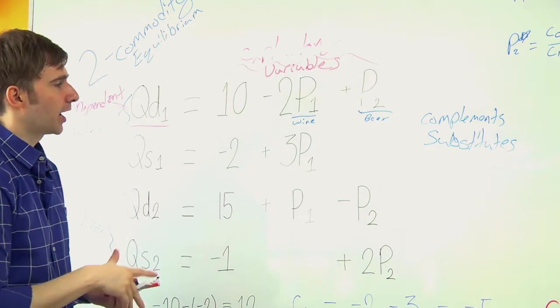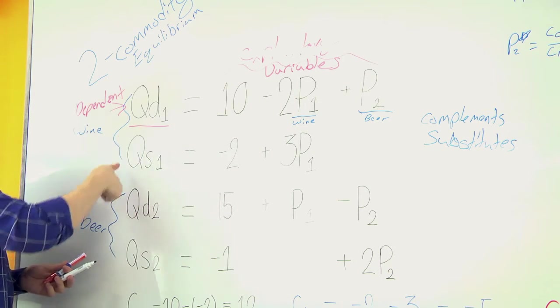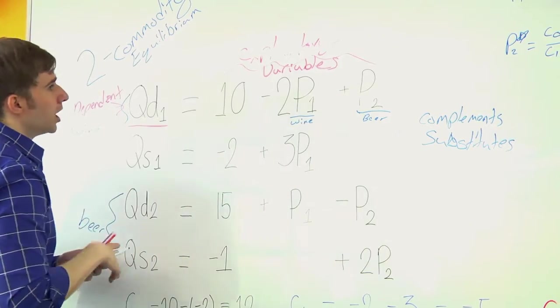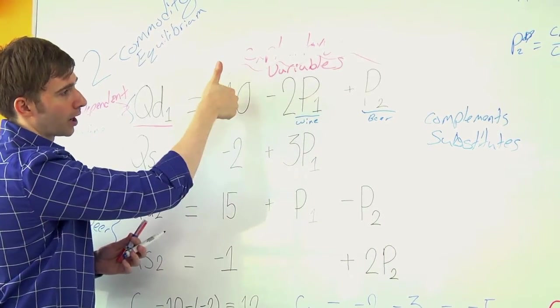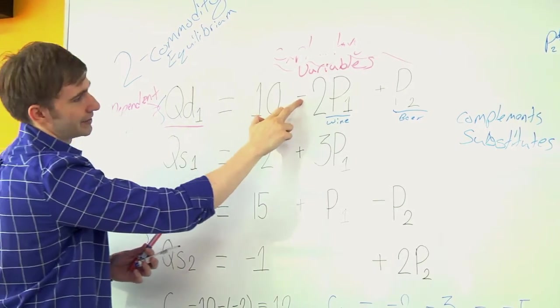So if the price were to go up for beer, then the quantity demand for wine would also go up. So we have a positive sign. If the price for wine were to go up, then the quantity demand for wine would go down. So we have a negative sign.